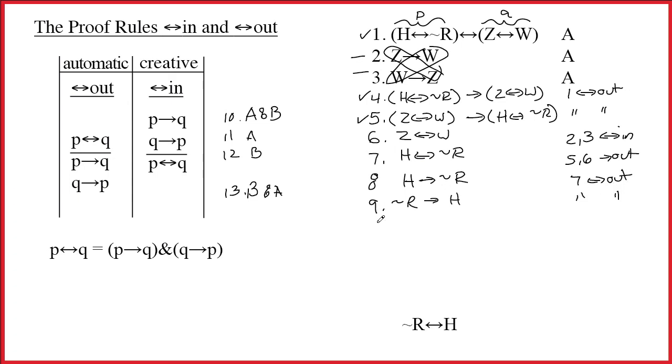But now that we have eight and nine, we can use the double arrow in rule, and we'll put these together and just say eight comma nine double arrow in, and success, we're done. I hope you get the impression that double arrow in and double arrow out are really very simple rules, because in fact they are.